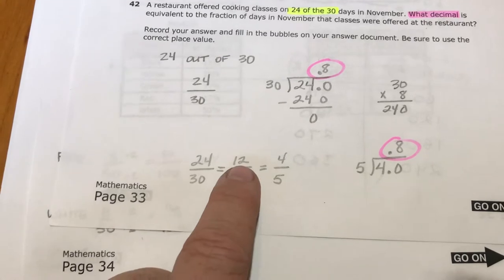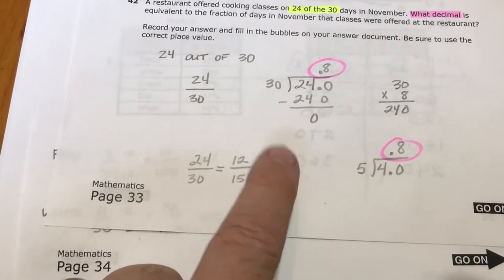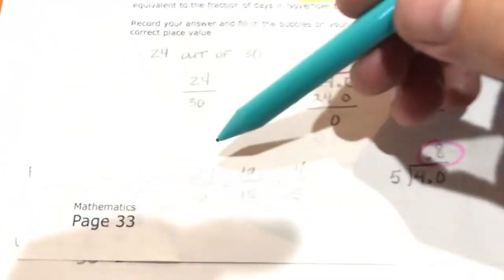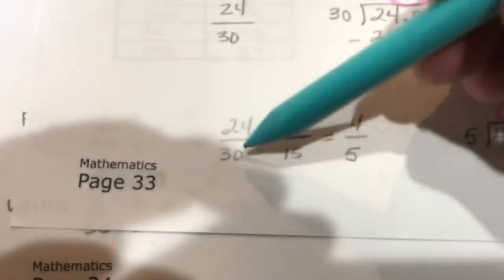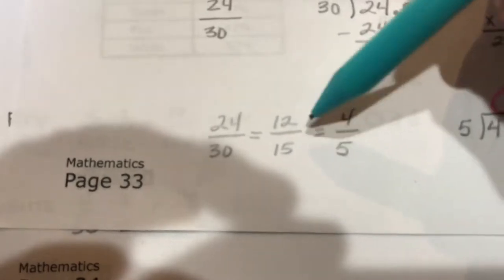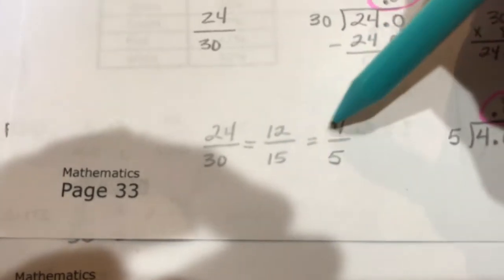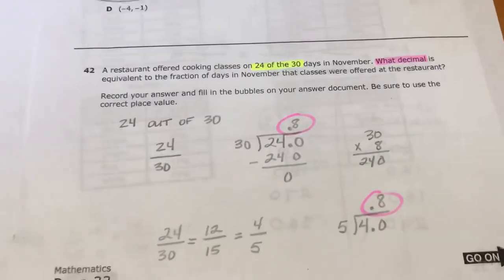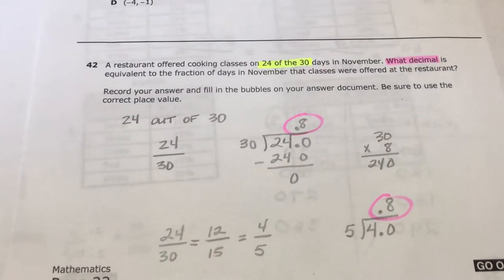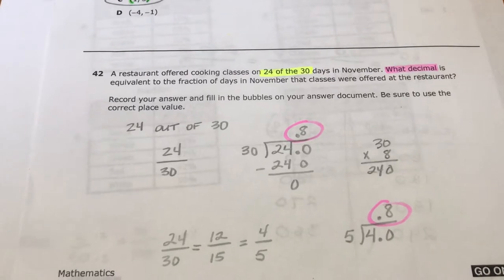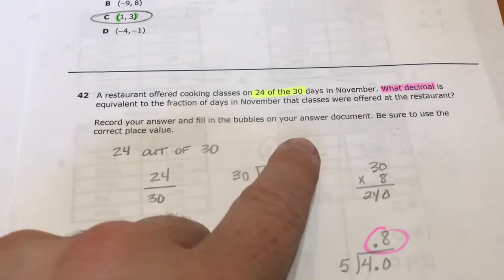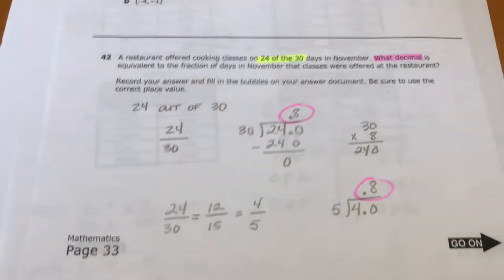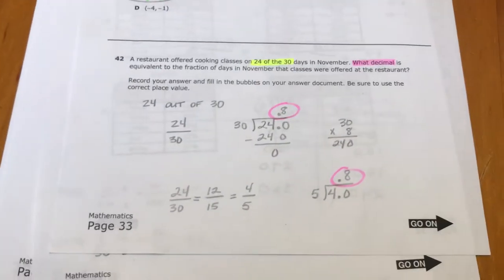You can simplify the fraction. From here to here I divided them both by 2, but from here to here I divided them both by 3. So 12 divided by 3 is 4, 15 divided by 3 is 5, and 4 divided by 5 is also 0.8. So 0.8 is the answer, and this would have been one that you needed to bubble in and fill in with the correct place value.